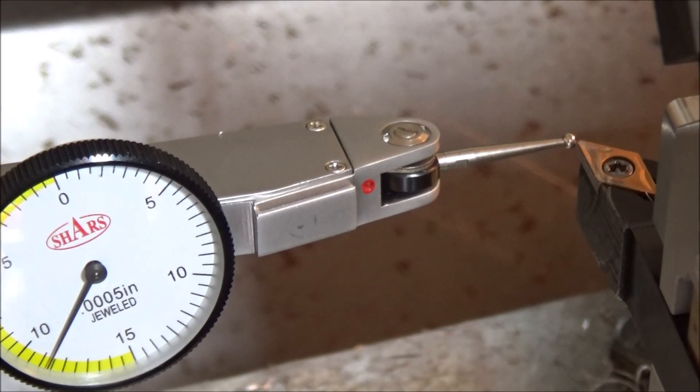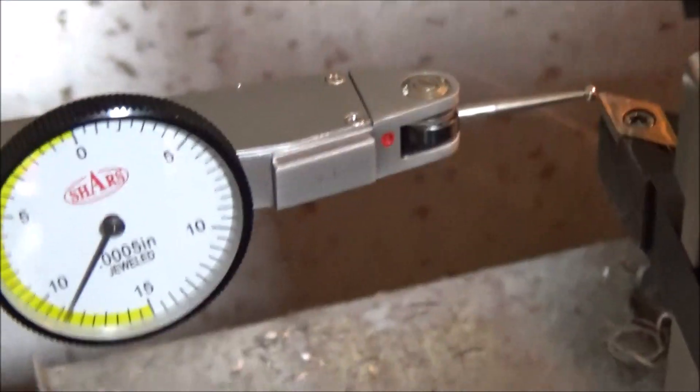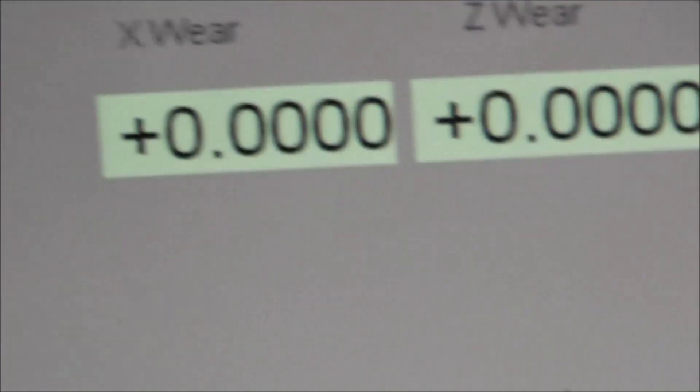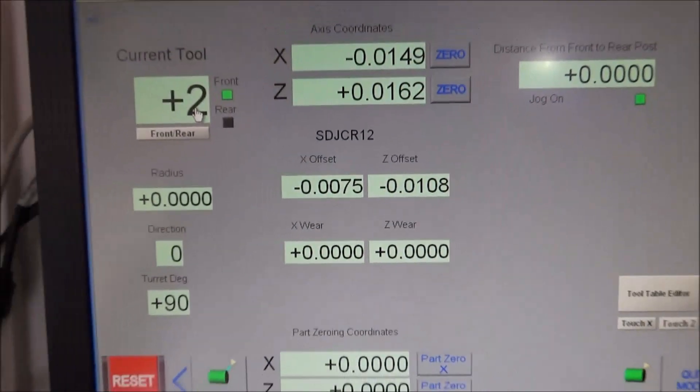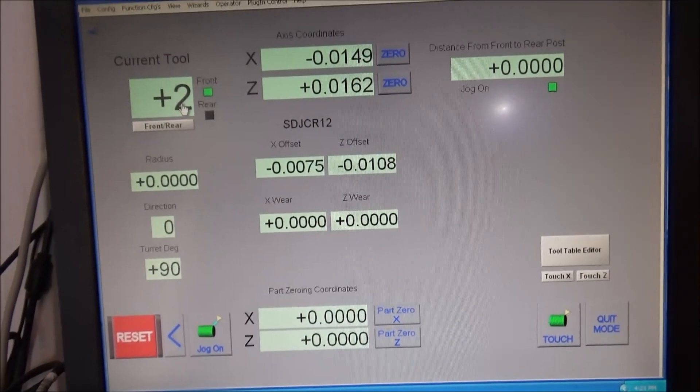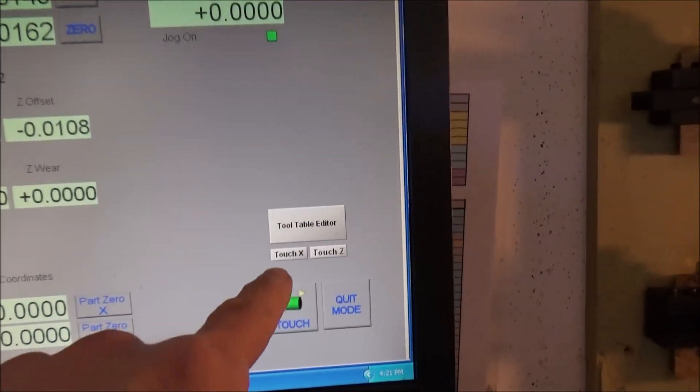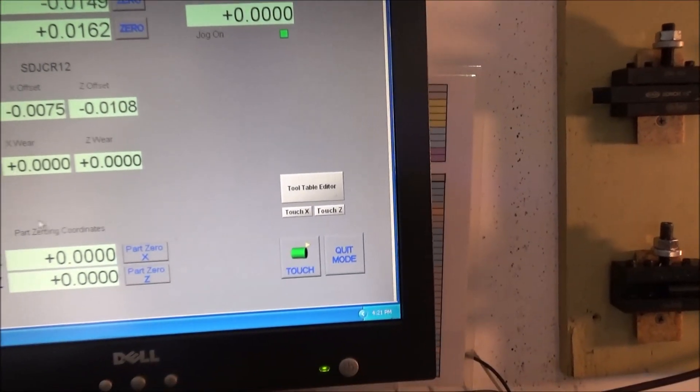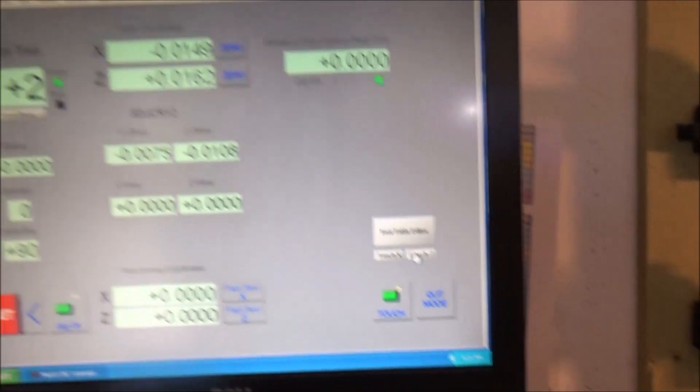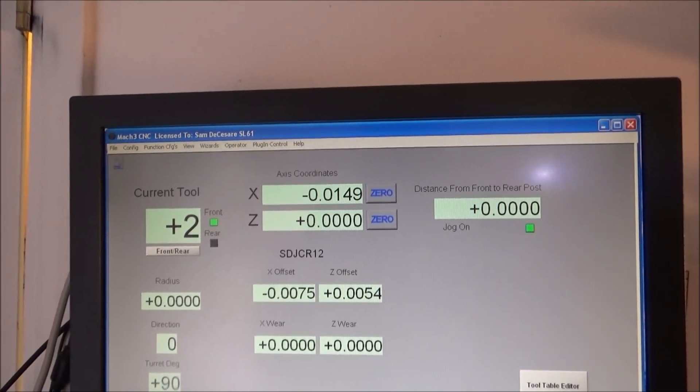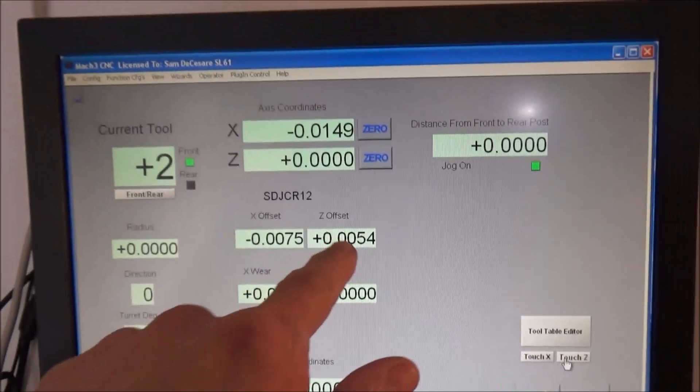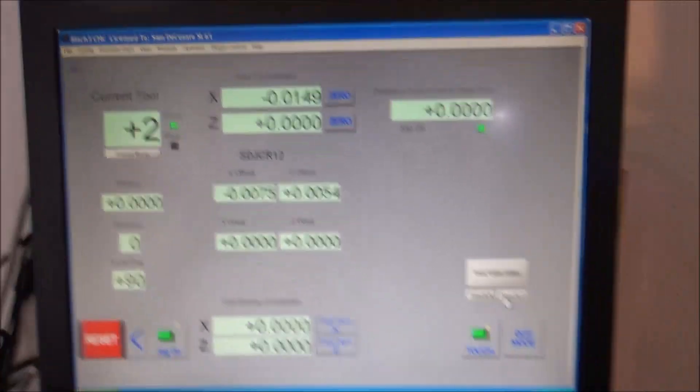What I'm going to do is go to the tool table here. I'm going to select tool number 2. In the tool offset screen here, I'm going to select tool number 2. Let me zoom out. So I'm selecting tool number 2 and then I'm going to hit this touch Z right here, and that's going to set the Z-axis offset. You can see that the Z-axis offset there changed.